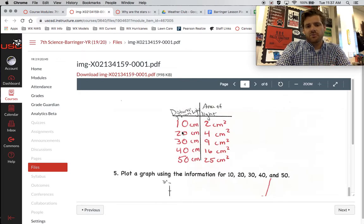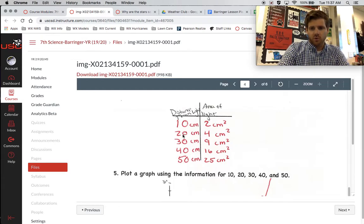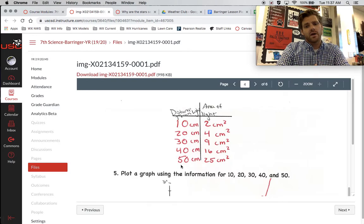As we get further and further away from the source of light, we started at 10, then we went to 20 centimeters, then 30, then 40, then 50. As we got further and further away, what ended up happening was that the area that the light covered ended up being much larger. So the distance increases, the area that the light covered also increases.